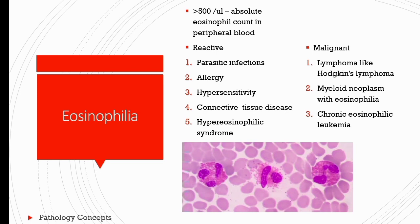When clonality and blasts are seen along with PDGFRA, PDGFRB, and FGFR1 mutations, it is usually associated with myeloid neoplasm with eosinophilia. When these mutations are excluded and clonality and blasts are seen, this favors the diagnosis of chronic eosinophilic leukemia. When no blasts, no clonality, and no reactive causes are found, and persistent eosinophilia for at least 6 months with organ involvement is seen, this favors the diagnosis of hypereosinophilic syndrome — a diagnosis of exclusion.